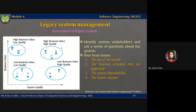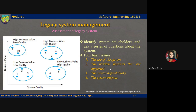To assess the business value of a system you have to identify system stakeholders such as end users of the system and their managers, and ask them a series of questions. The four basic issues to discuss are depicted on this slide. Firstly, the use of the system — if the systems are only used occasionally or by a small number of people, they may have a low business value.